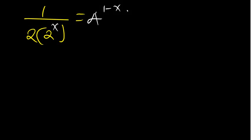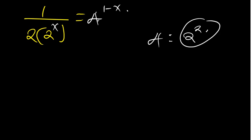Okay, so I want to find the value of x. The first thing we should do is note that 4 is the same as 2 to the power 2. So I can replace that. I'm going to say that one over 2 times two to the power x is going to be equal to 2 to the power 2 times one minus x.